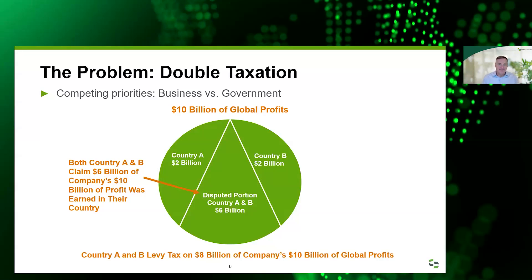The next issue — what CFOs and CEOs certainly don't like to hear about — is double taxation. What happens is you have set up your intercompany pricing in a particular way, but your legal obligations and the way you're running your business might differ from that. You've got $10 billion of global profits and all of a sudden you have a disputed portion between Country A and Country B of $6 billion, with both countries claiming they have the primary right to tax this.